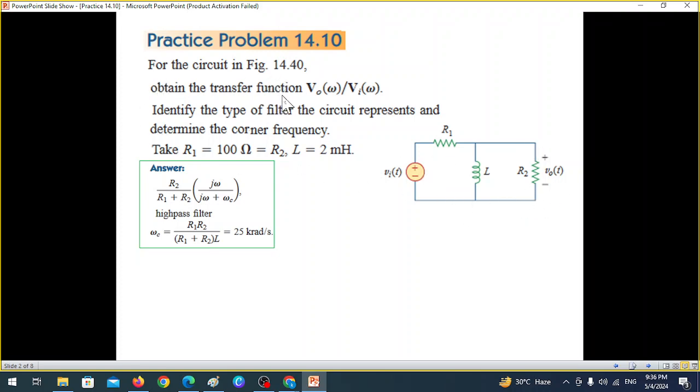obtain transfer function which is V_out over V_in, then identify the type of filter and then determine the corner frequency when R1, R2 is this value and L is 2 mH. The answers are also given, this is for the first one, second and third one.